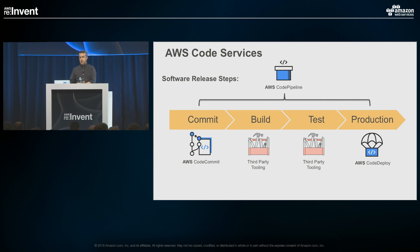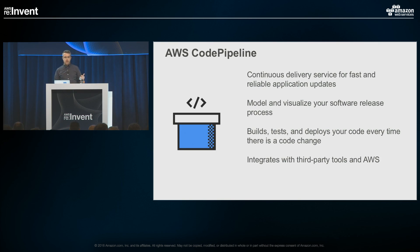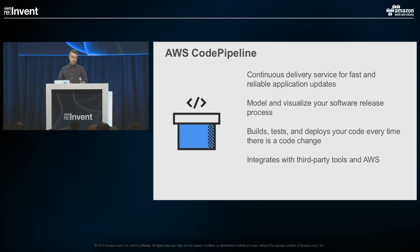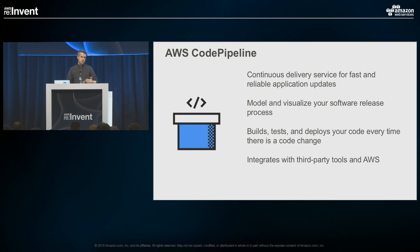Diving a bit deeper into CodePipeline — it's our continuous delivery service. It allows you to model and visualize your deployment flow for basically any application you could think of: a web app, an API service, a batch processing service, a mobile application. It lets you model builds, tests, deploys, and other actions, and integrates with third-party tools and other AWS services.